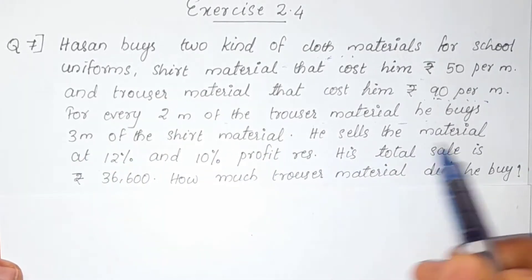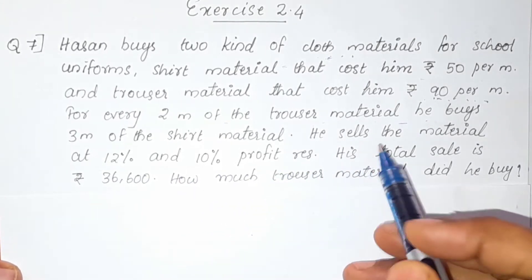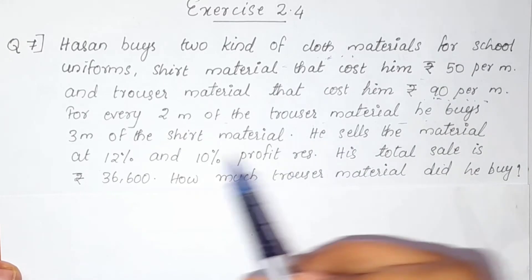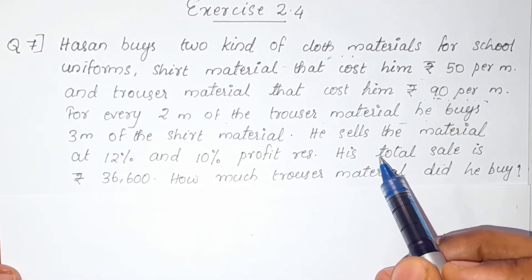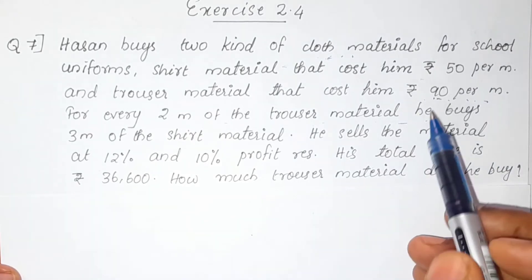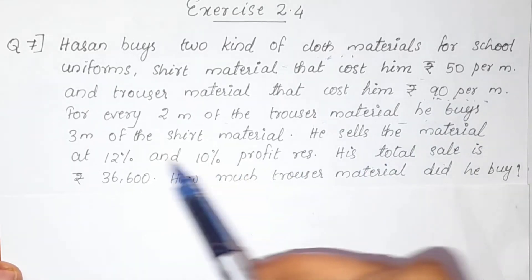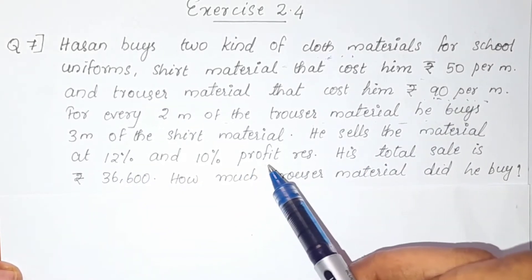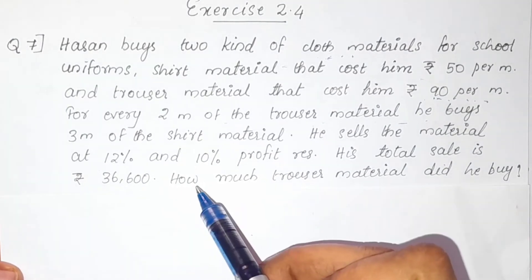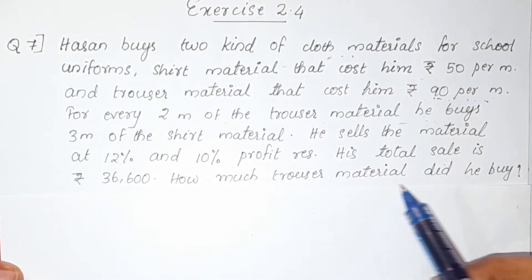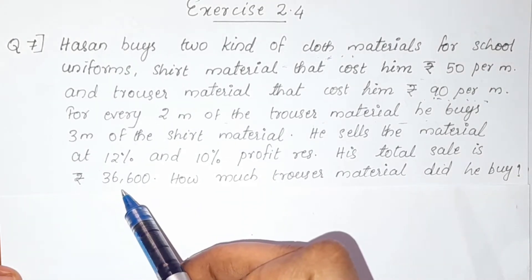He sells the shirt material at 12% profit and the trouser material at 10% profit respectively. His total sale is Rs. 36,600. We need to find how much trouser material he bought.